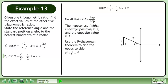Use the Pythagorean theorem to find the adjacent side. The Pythagorean theorem is x² plus y² equals r². The opposite side is 3, plug this in for y. The hypotenuse is 7, plug this in for r. This gives us x² plus 9 equals 49. Subtract 9 from both sides of the equation to isolate x². This gives us x² equals 40.